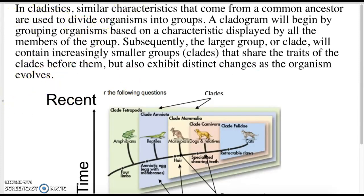Please highlight as I read the intro paragraph. In cladistics, similar characteristics that come from a common ancestor are used to divide organisms into groups.